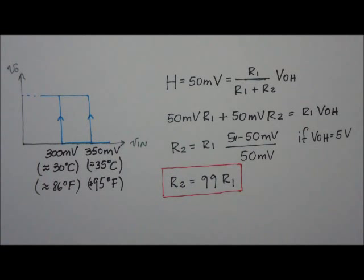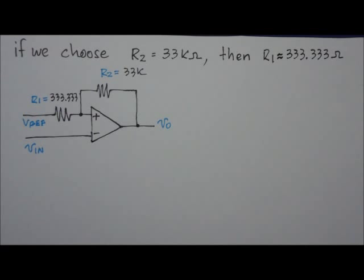And from there, we can find an expression that relates R1 and R2. So, using that expression and choosing R2 to be 33 kilo ohms, R1 becomes 333 times 333 ohms.